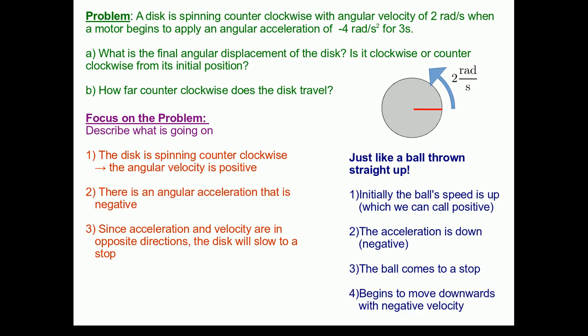Finally, for the ball, after it stops, it begins to move downwards with a negative velocity. The exact same thing is going to happen in our rotating disc. The disc has come to a stop, and there is still a negative acceleration. So, the disc will begin to spin the other way, clockwise.